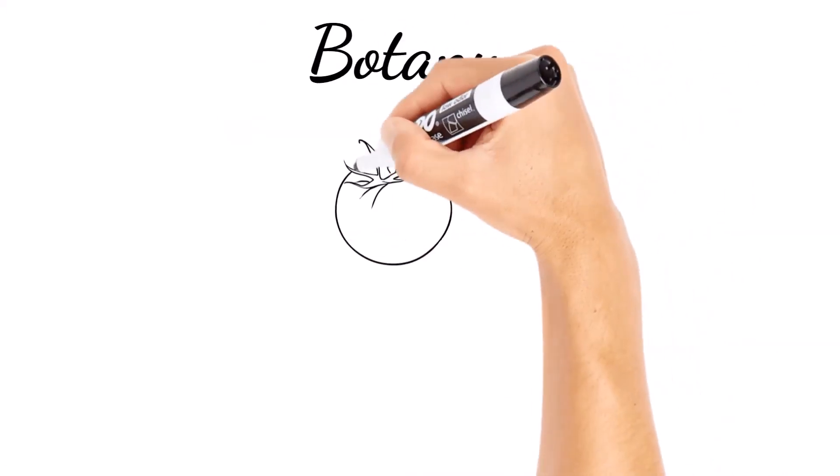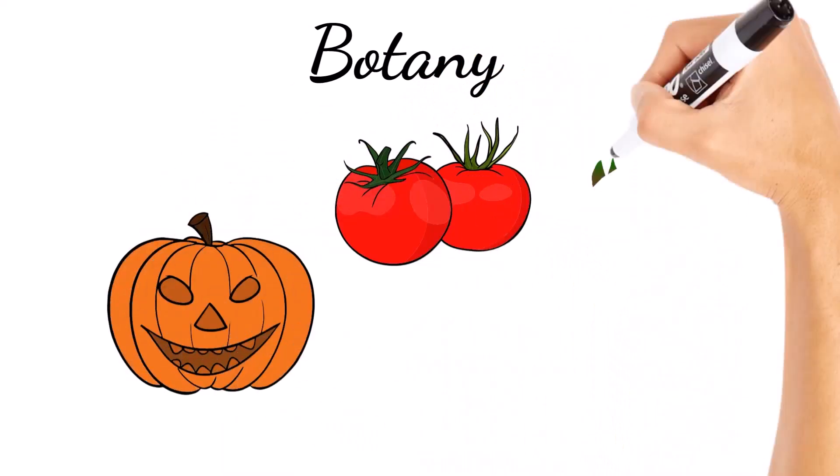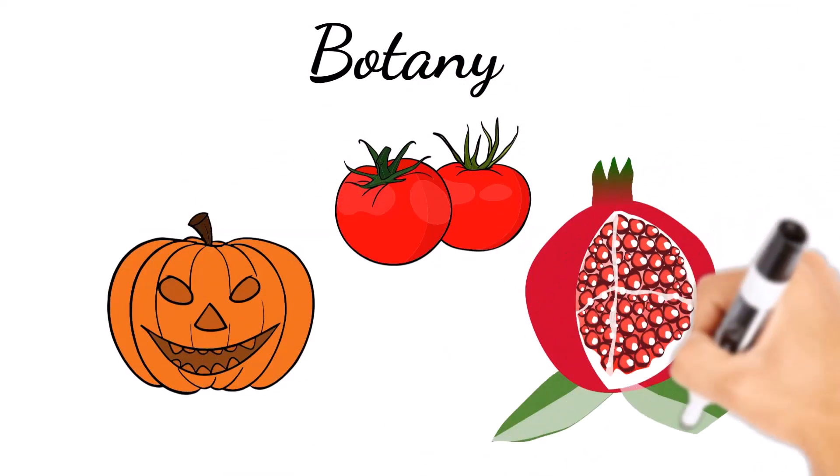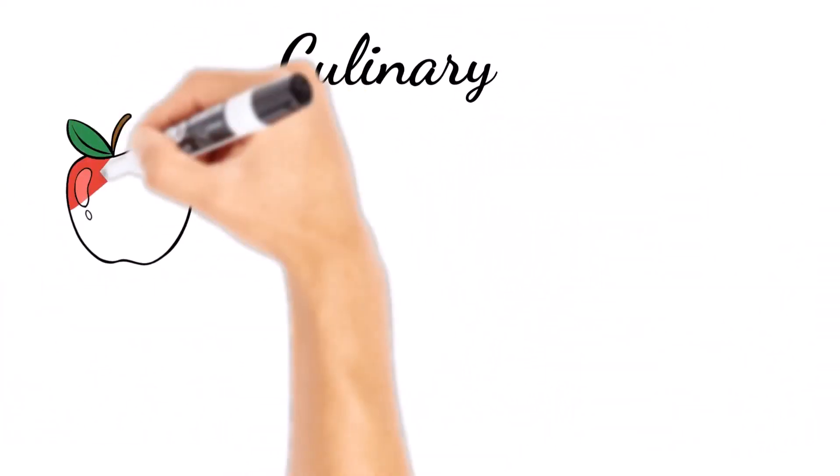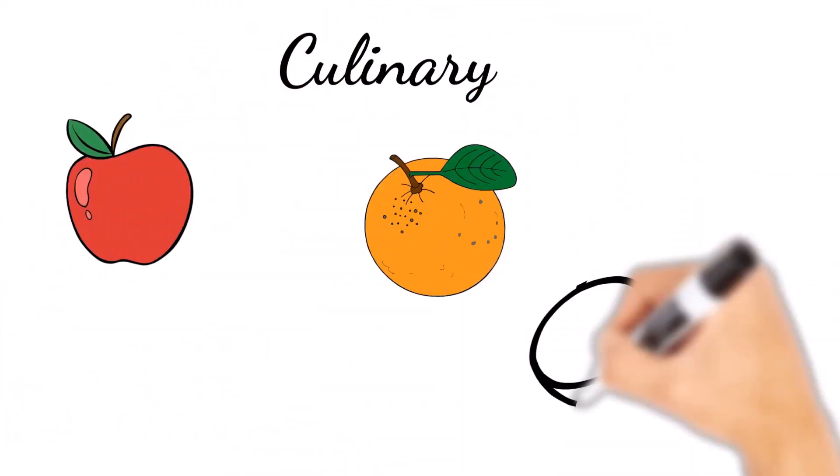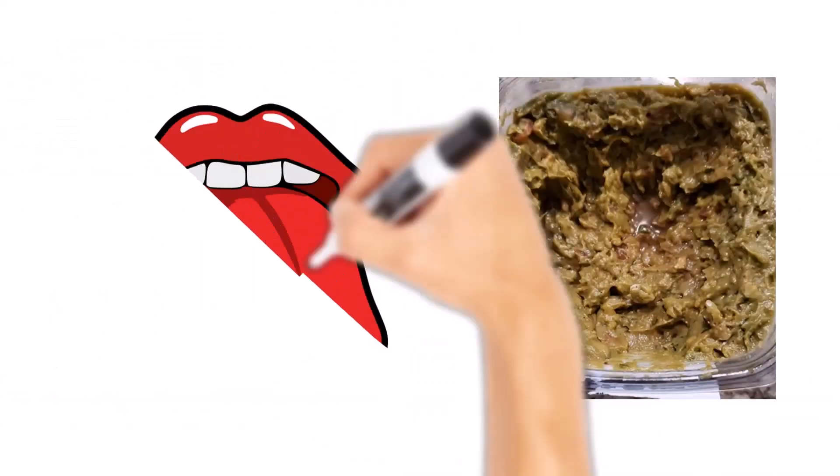This would include tomatoes, pumpkins, and pomegranates. However, in culinary terms, a fruit is sweet or sour produce, such as apples, oranges, lemons, and peaches. But let's get back to our brown guacamole.